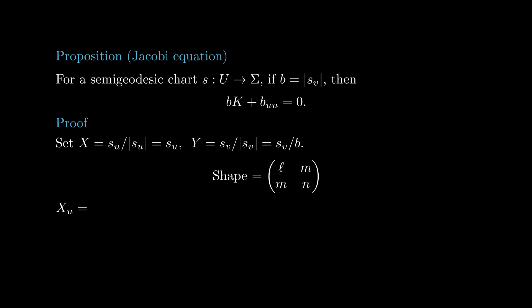The main step is to express the derivatives of X and Y in terms of this matrix. We begin with XU. Notice that XU equals SUU, which by hypothesis is perpendicular to both X and Y. To find the normal component, compute SUU.N, which by the product rule equals the derivative of SU.N with respect to U, minus SU times NU. By definition, minus NU is the shape operator applied to SU, so we get that XU equals LN.